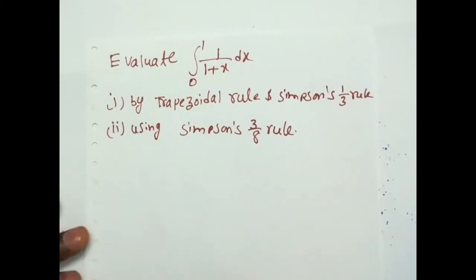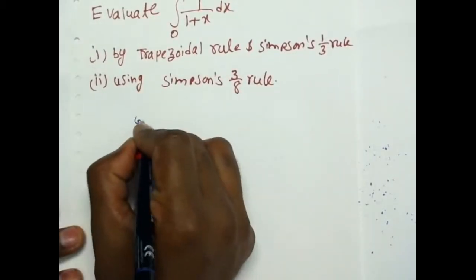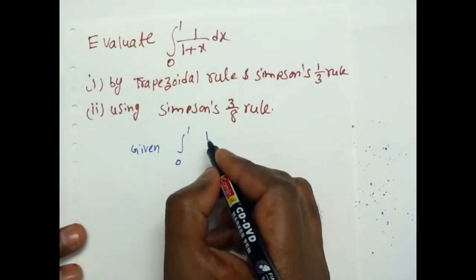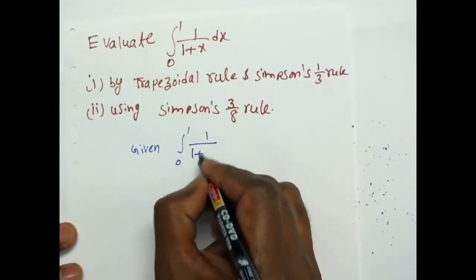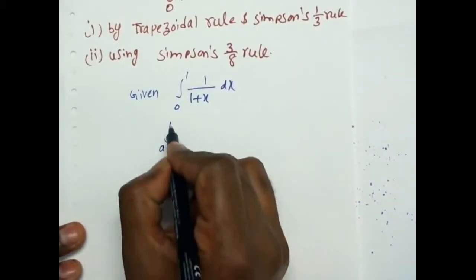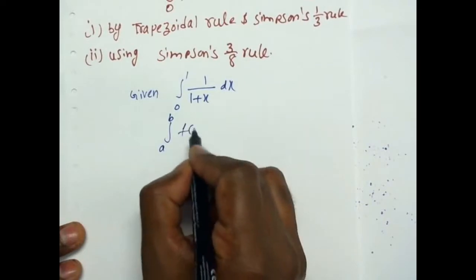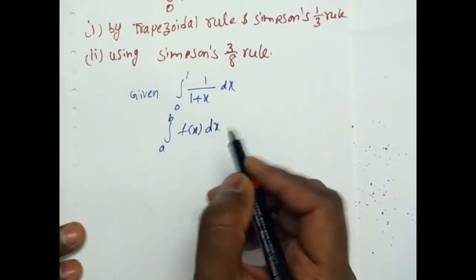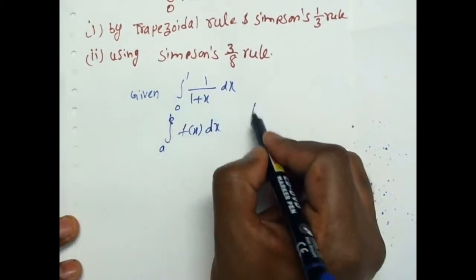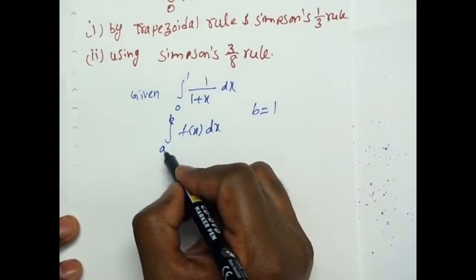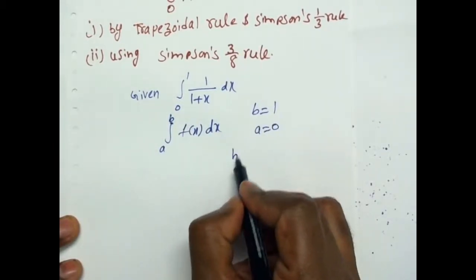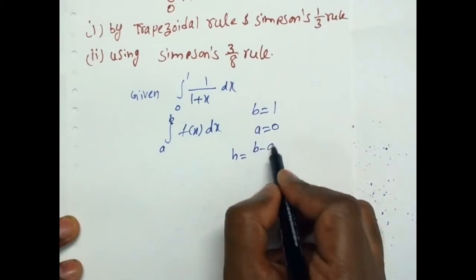First we write down the given equation: integral from 0 to 1 of 1/(1+x) dx. The general integral form is integral from a to b of f(x) dx. Comparing these two: the upper limit b equals 1, and the lower limit a equals 0. Now, h is equal to (b minus a) divided by n.